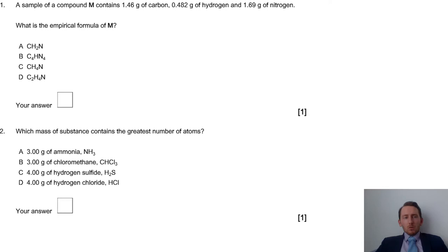Hi everyone, welcome to some questions on amount of substances. So first question, we've got a multiple choice question. We've got a compound M containing a set amount of carbon, hydrogen and nitrogen and it asks us what the empirical formula of M is. Whenever we see something like this, hopefully this tends to be a question that's answered fairly well. We need to work out what that empirical formula is.